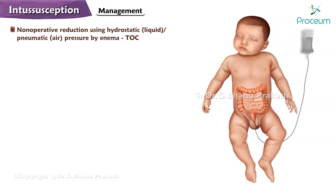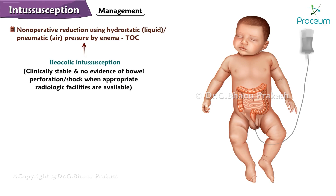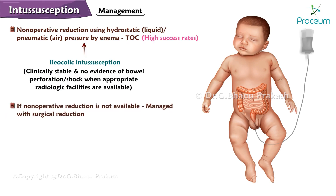Non-operative reduction using hydrostatic or air pressure by enema is the treatment of choice for an infant or child with ileocolic intussusception who is clinically stable and has no evidence of bowel perforation or shock, when appropriate radiologic facilities are available. Enema reduction has high success rates. In resource-limited settings where non-operative reduction is unavailable, surgical reduction is used.